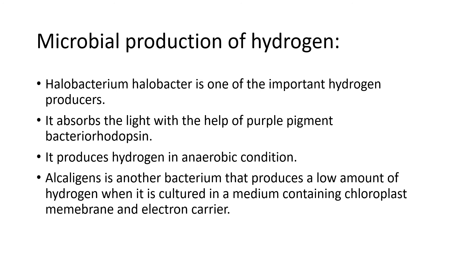Alcaligenes is another bacterium that produces a low amount of hydrogen. It is cultured in a medium containing chloroplast membranes and electron carriers. These two bacteria - Halobacterium and Alcaligenes - are used for the production of hydrogen gas. This concludes today's class on hydrogen gas production.